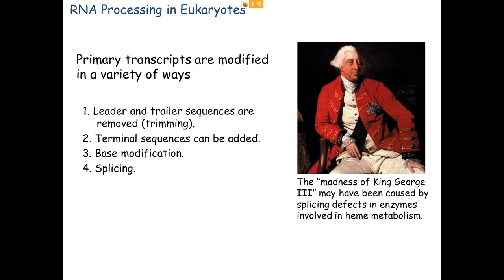Not quite base addition but more base modification is the third type. We can put a base on the 5' end; however, we can only put one, and we put it on backwards so that it looks like the sequence has no 5' end when we're done. We can also modify bases by adding methyl groups, acetate groups, or rearranging some bonds — doing all sorts of things to both the bases and the sugars.